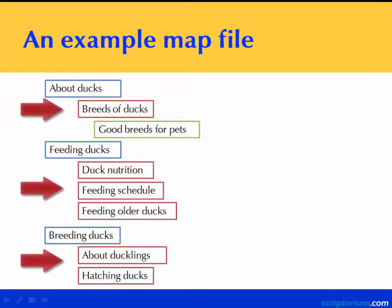Breeds of ducks, duck nutrition — all the ones in red — can be thought of as sections in the chapter, or subsections of a section. So we've got a hierarchy of content inherent in our map file.